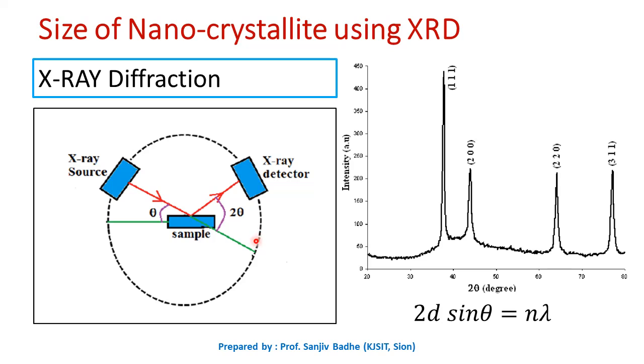After finding intensity of X-rays at different angles, a graph of intensity versus angle 2 theta is plotted. In this graph, we can get peaks at certain angles. This peak represents the constructive interference, that is maximum in the diffraction pattern.